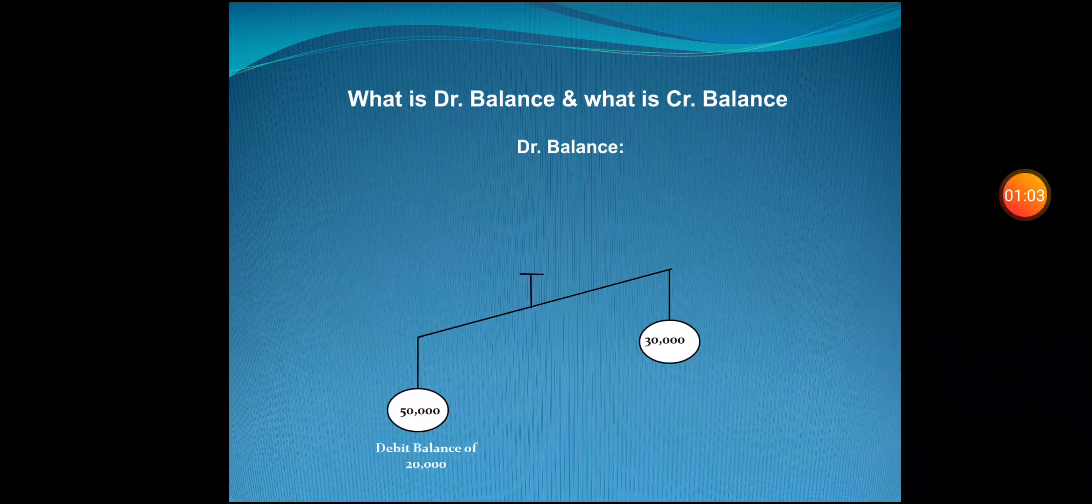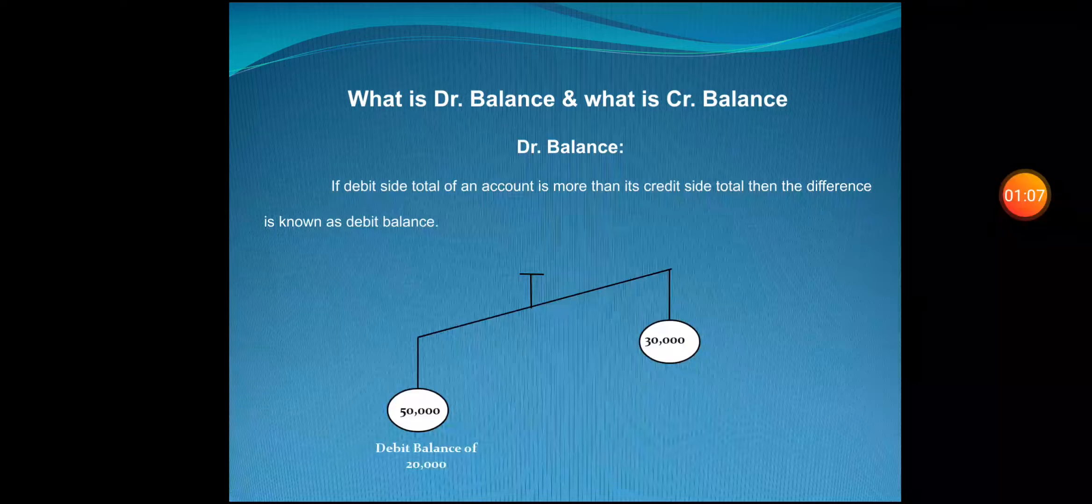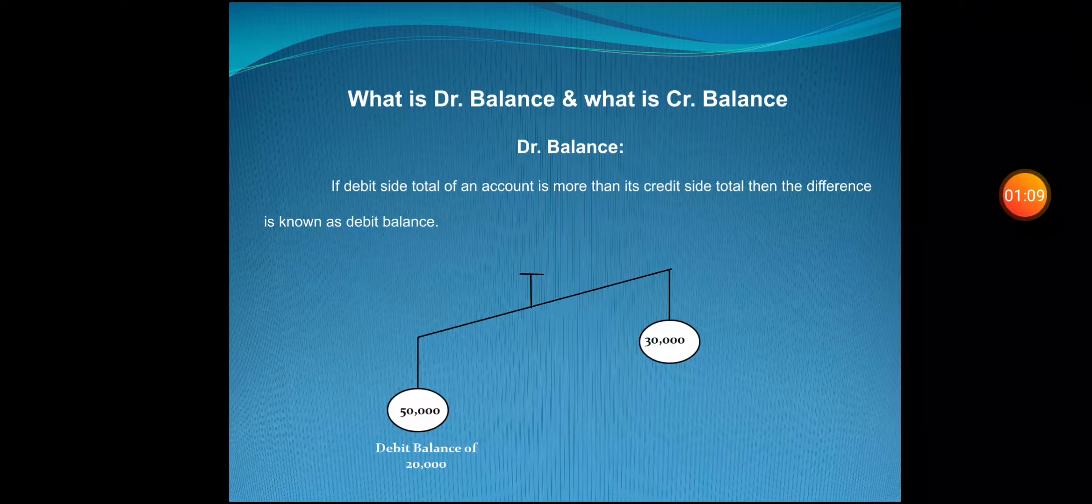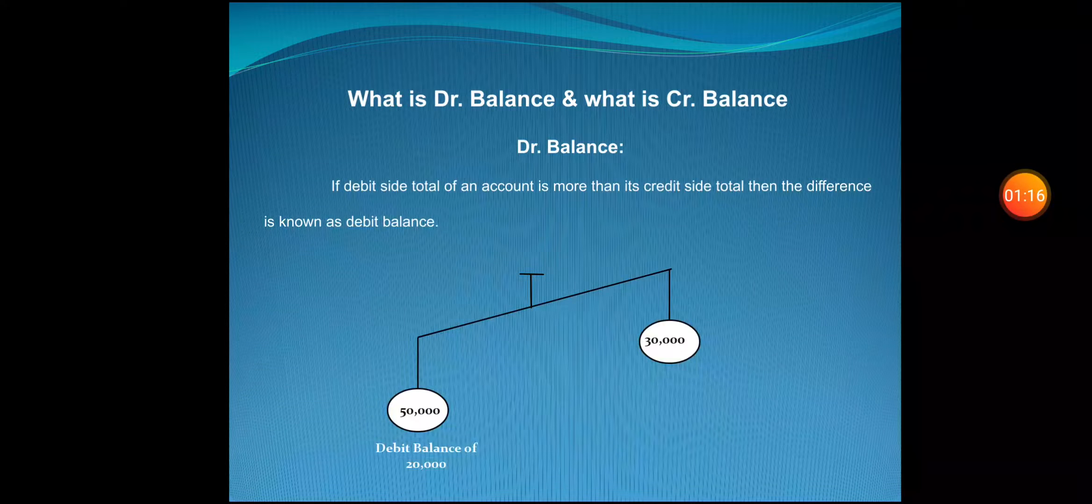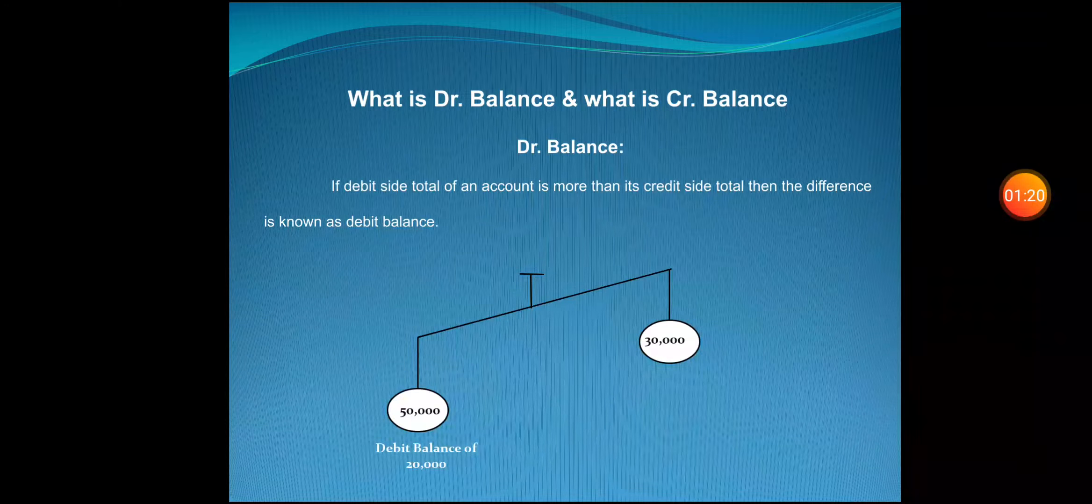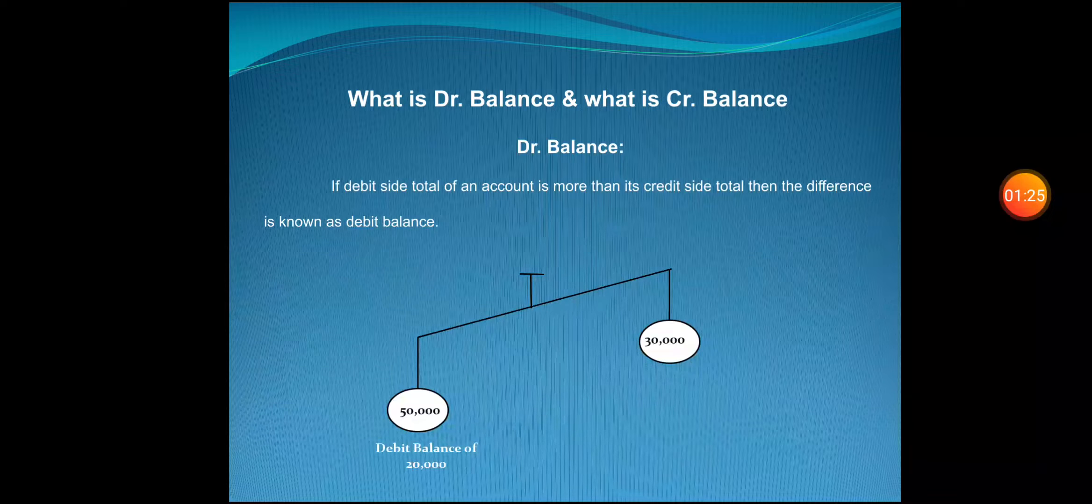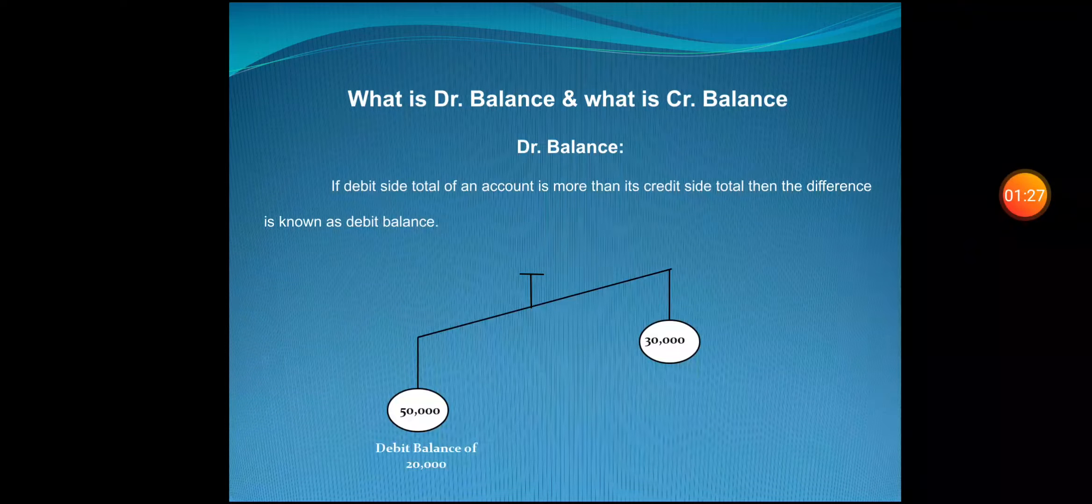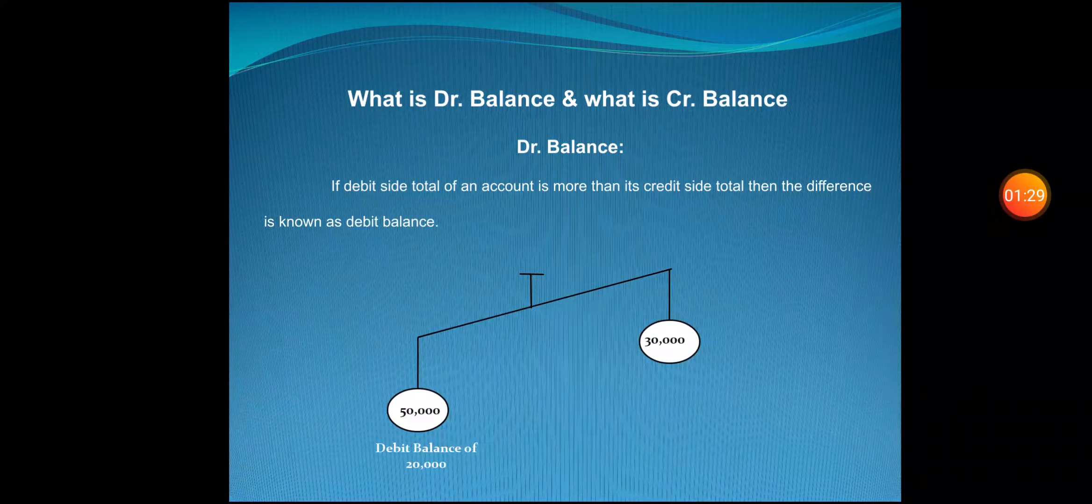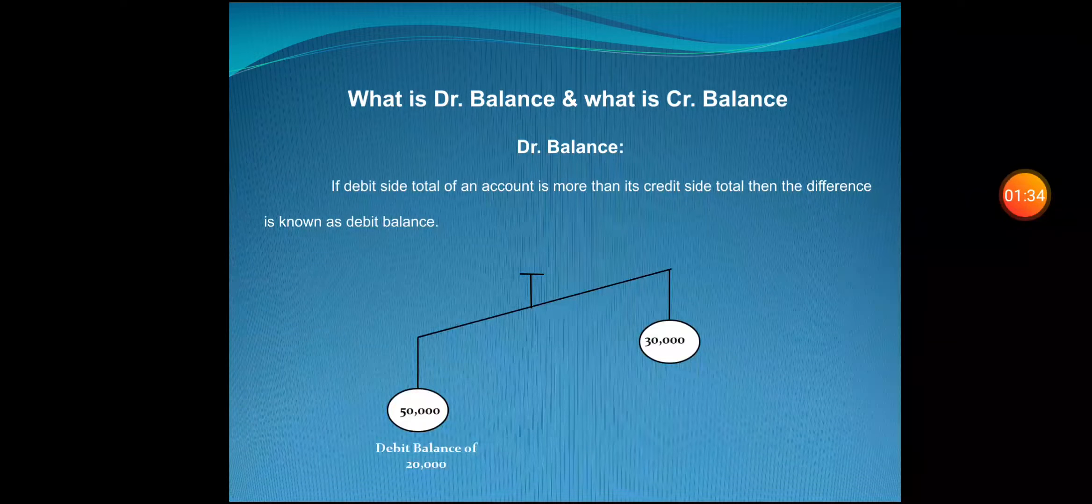Here in this figure, you can see on the left-hand side 50,000 and on the right-hand side rupees 30,000. So the debit side total is heavier than the credit side total by rupees 20,000. So there is a debit balance. We can define: if the debit side total of an account is more than its credit side total, then the difference is known as debit balance.